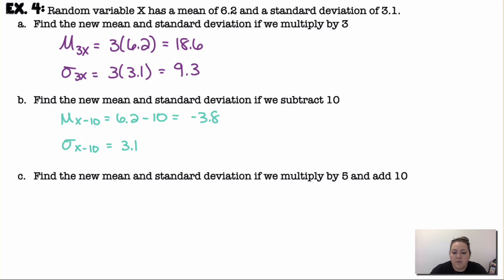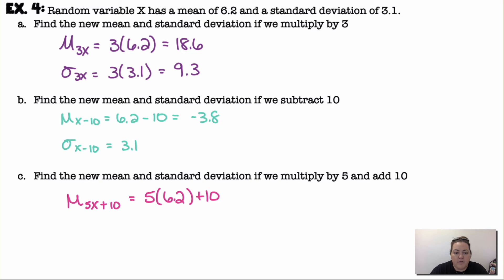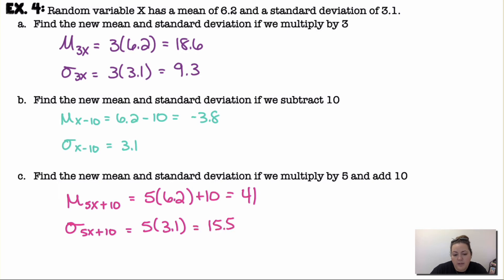If we multiply by 5 and add 10: multiplying by 5 affects both the mean and the standard deviation, while adding 10 only affects the mean. So the new mean is 6.2 times 5 plus 10, which equals 41. The standard deviation is only multiplied by 5, giving 15.5 — the plus 10 doesn't change the standard deviation because it's just shifting.